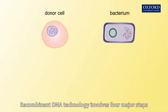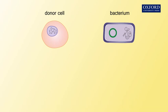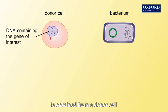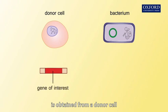Recombinant DNA technology involves four major steps. Firstly, a DNA fragment containing the gene of interest is obtained from a donor cell.